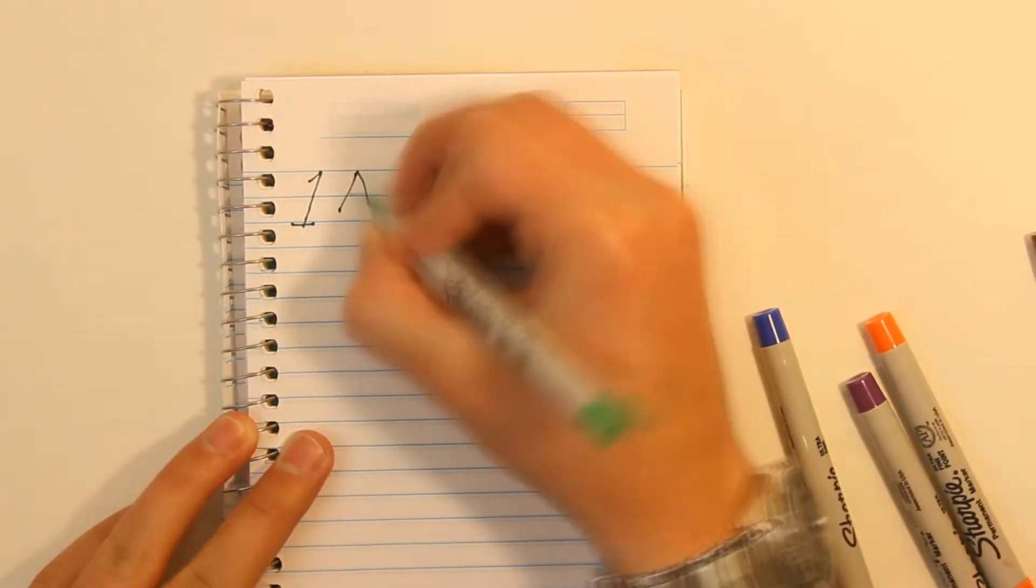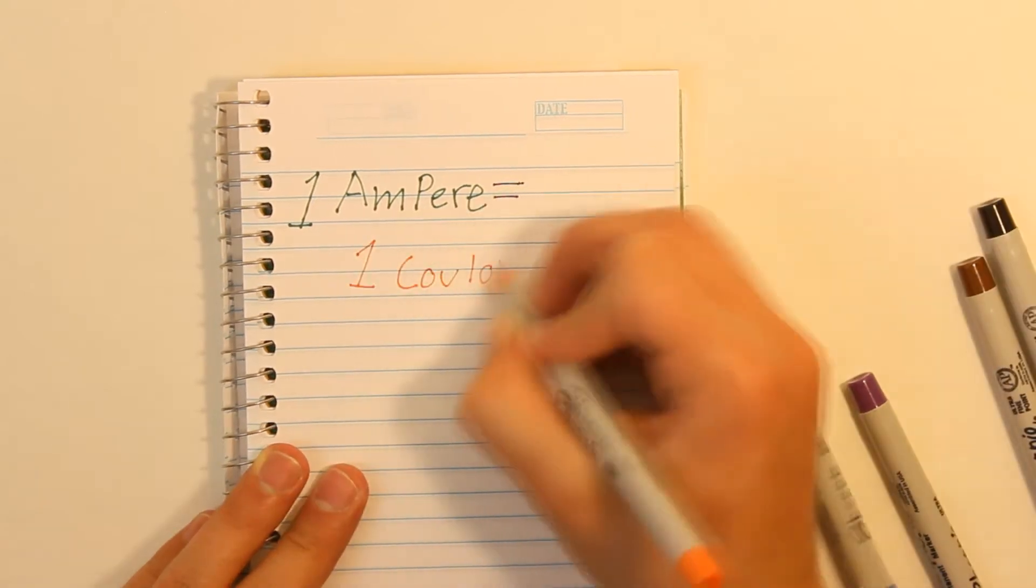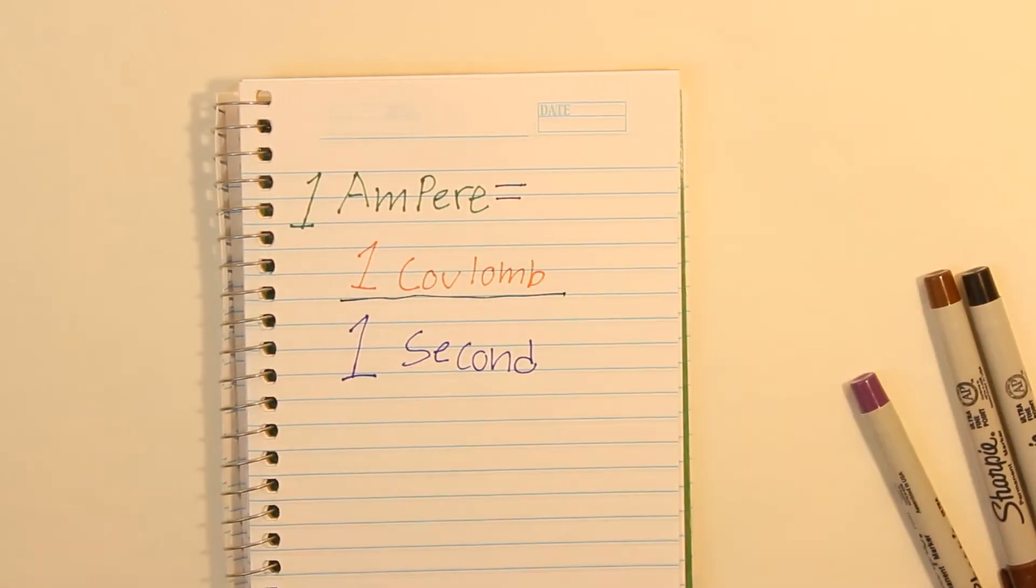An ampere, named after Andrea Marie Ampere, is measured in terms of coulombs per second. One amp equals one coulomb per one second.